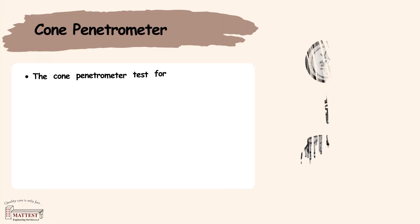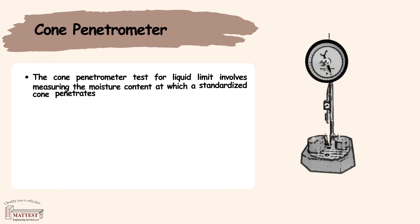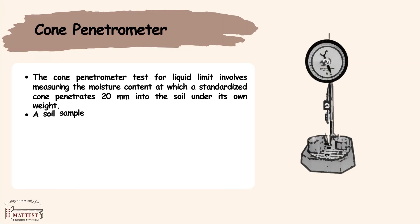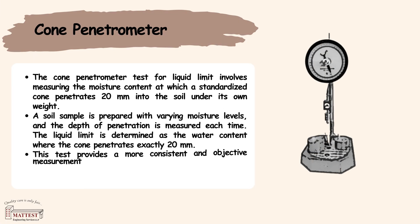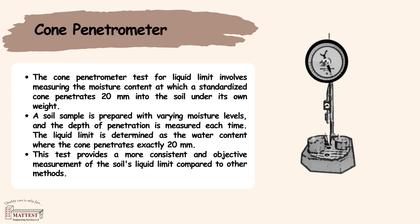Cone penetrometer method: The cone penetrometer test measures the moisture content at which a cone penetrates 20 mm into the soil. A soil sample is tested at various moisture levels, and the liquid limit is defined as the water content for 20 mm penetration.